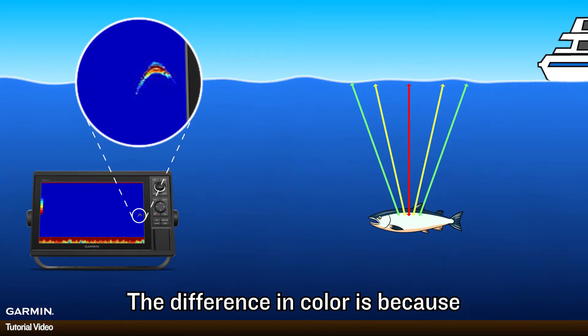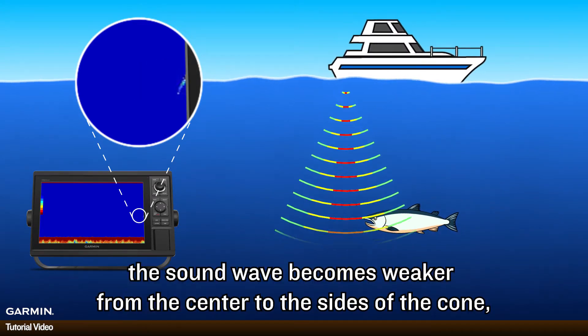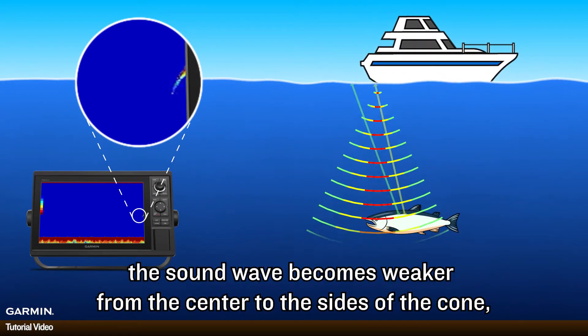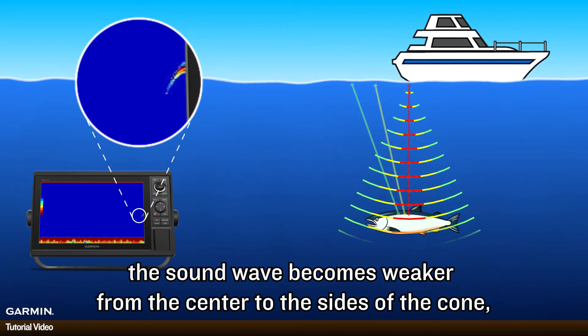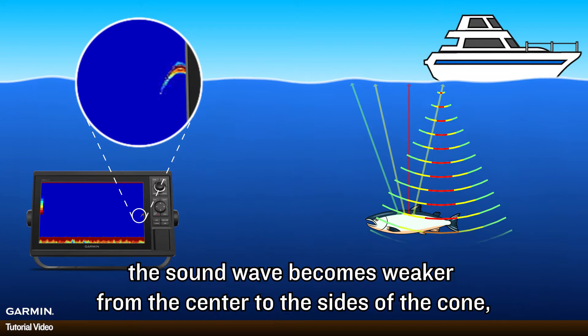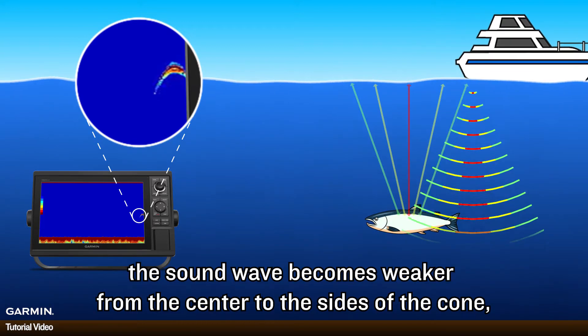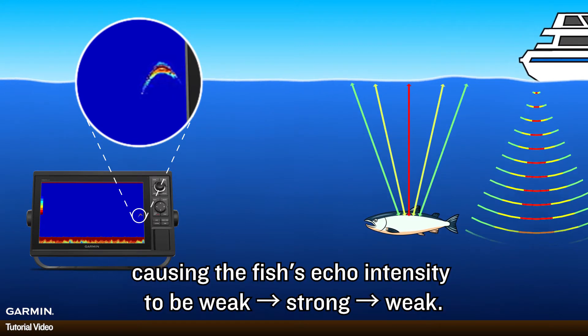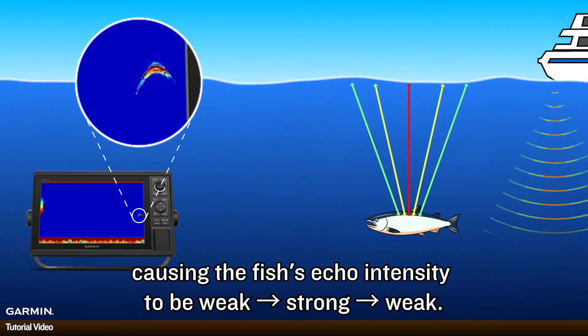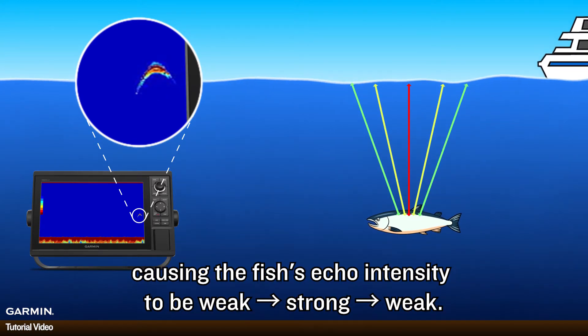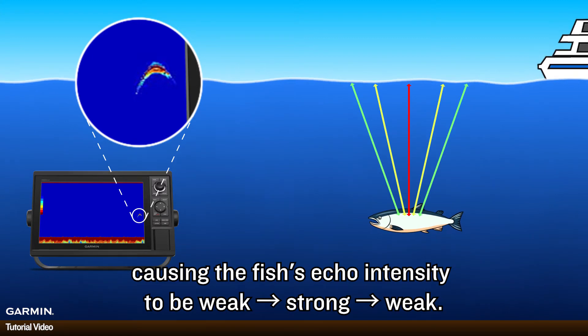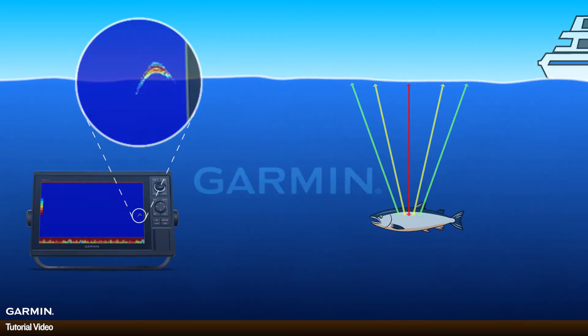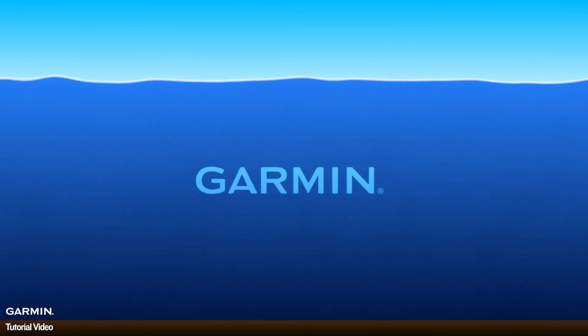The difference in color is because the sound wave becomes weaker from the center to the edge of the cone, causing the fish's echo intensity to be weak, then strong, then weak.